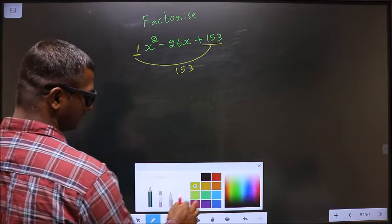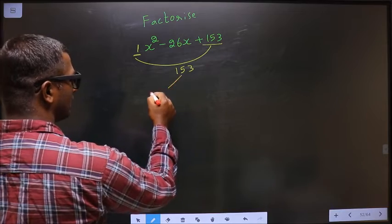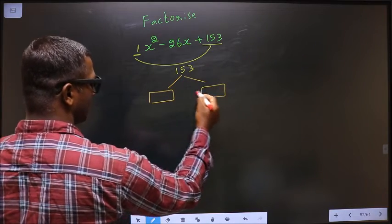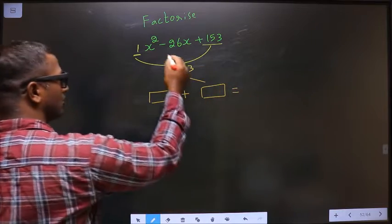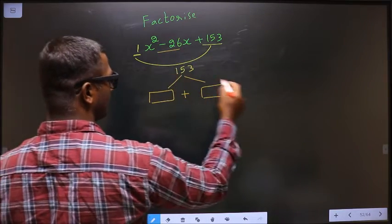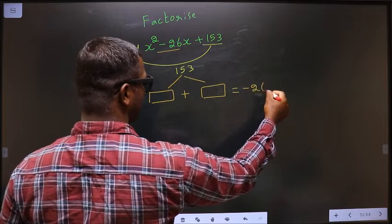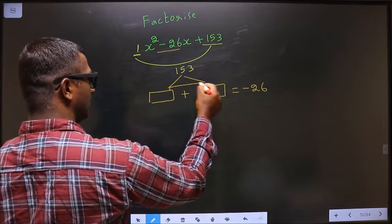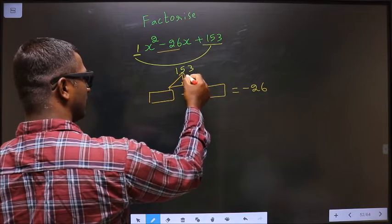Okay, next. Now you should look out for two numbers such that when you add the two numbers, you should get this middle coefficient, that is minus 26. And also when you multiply these two numbers, you should get 153.